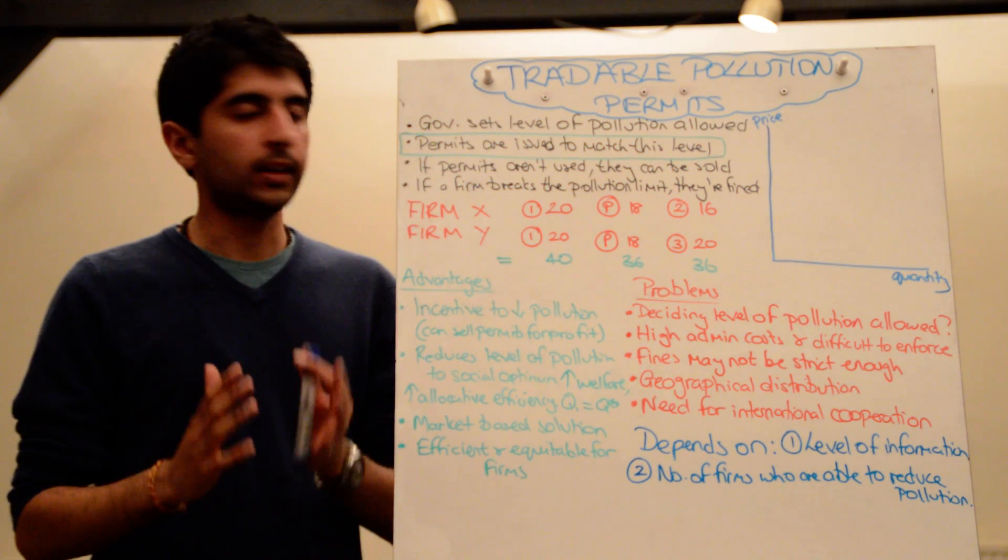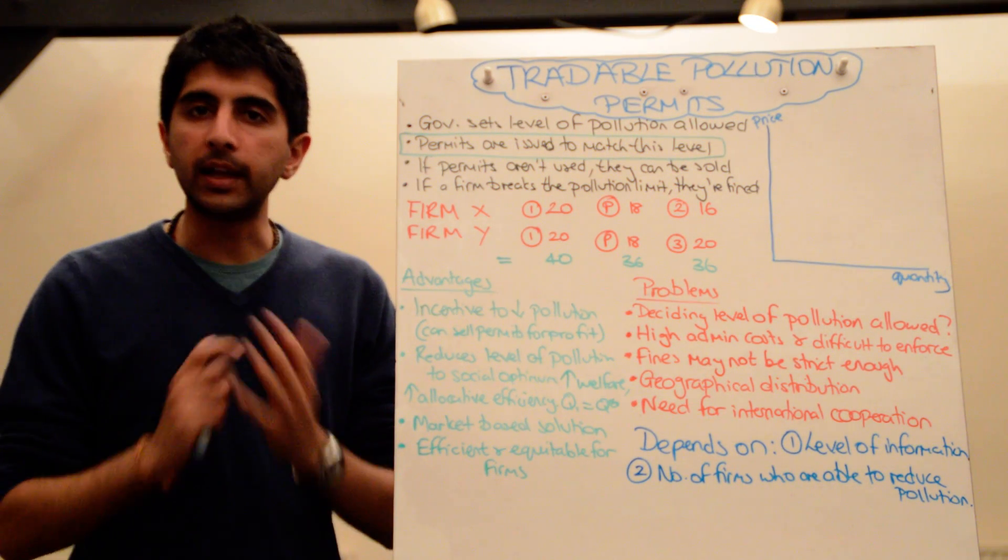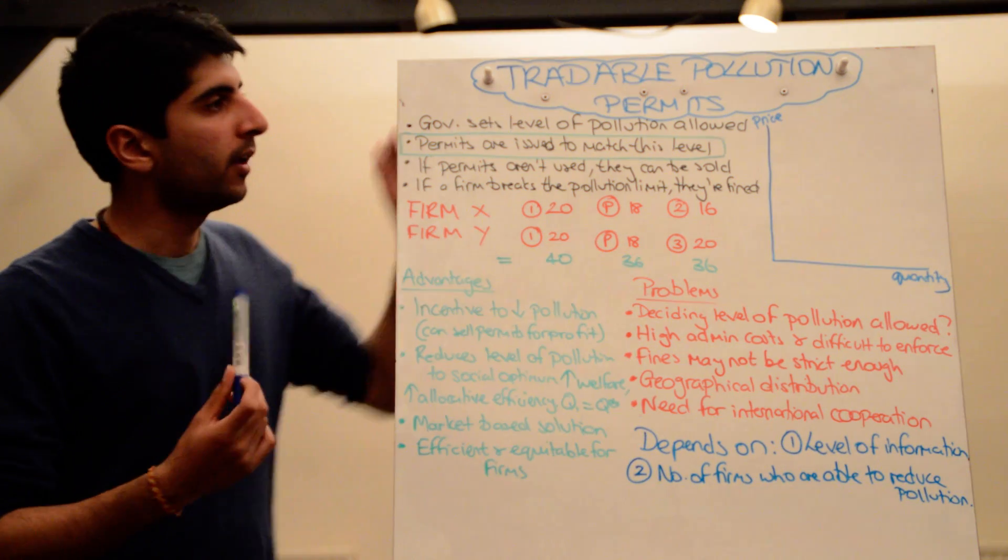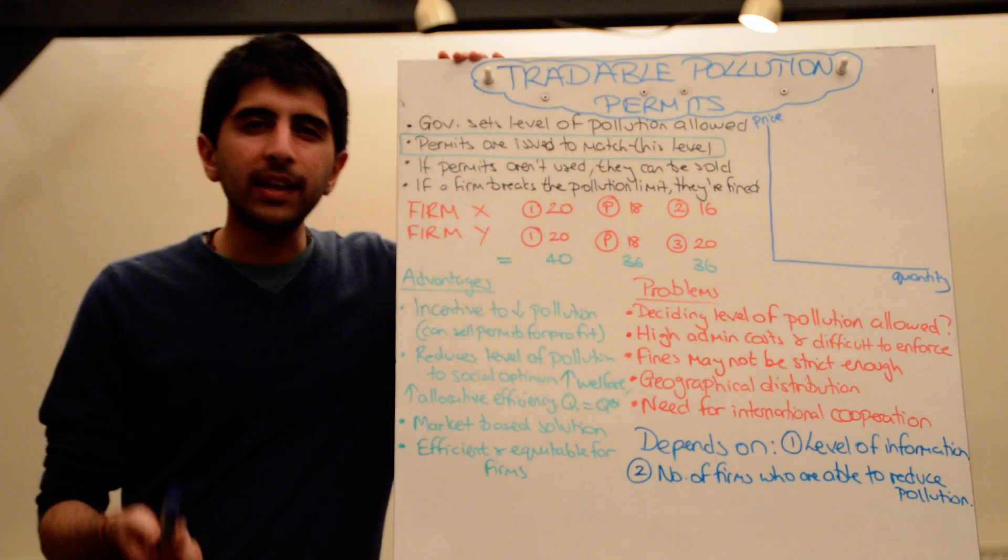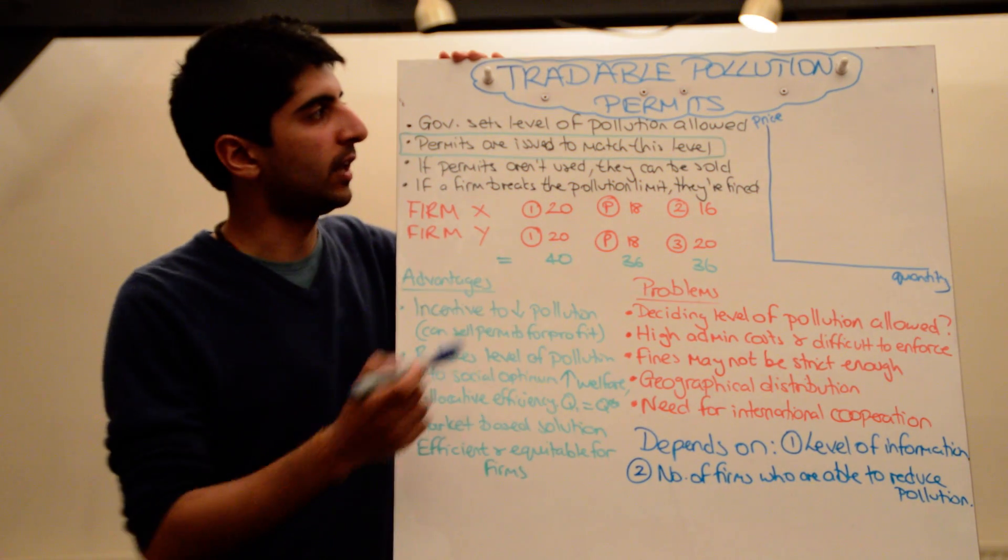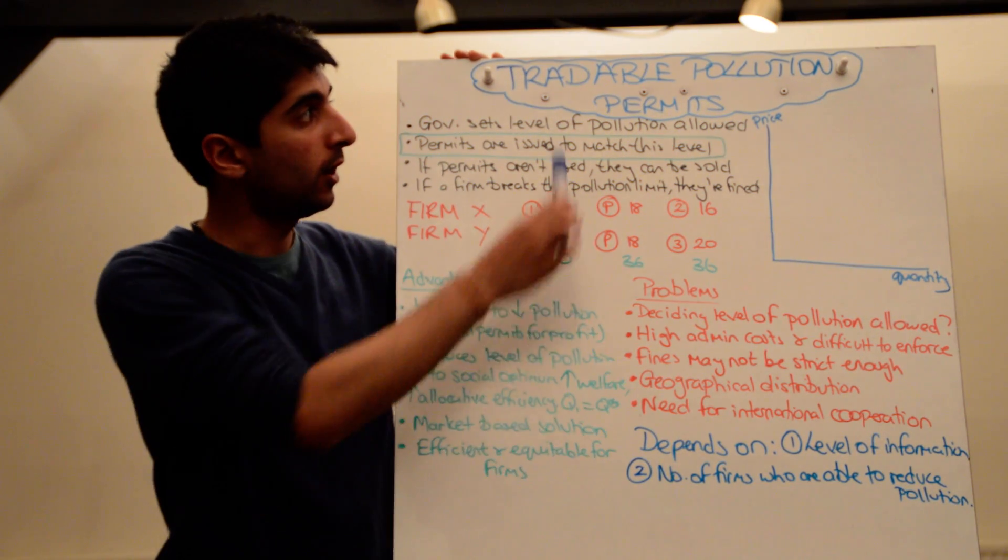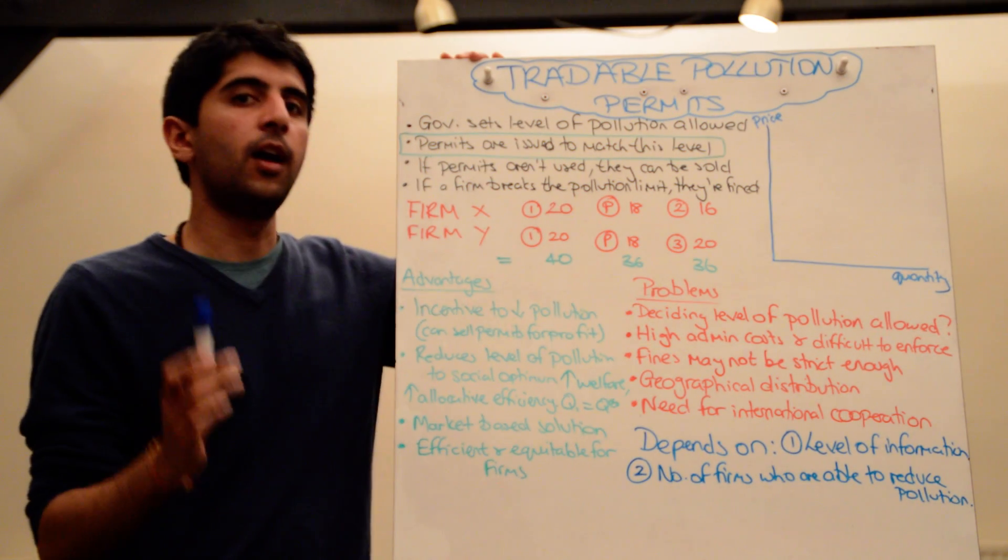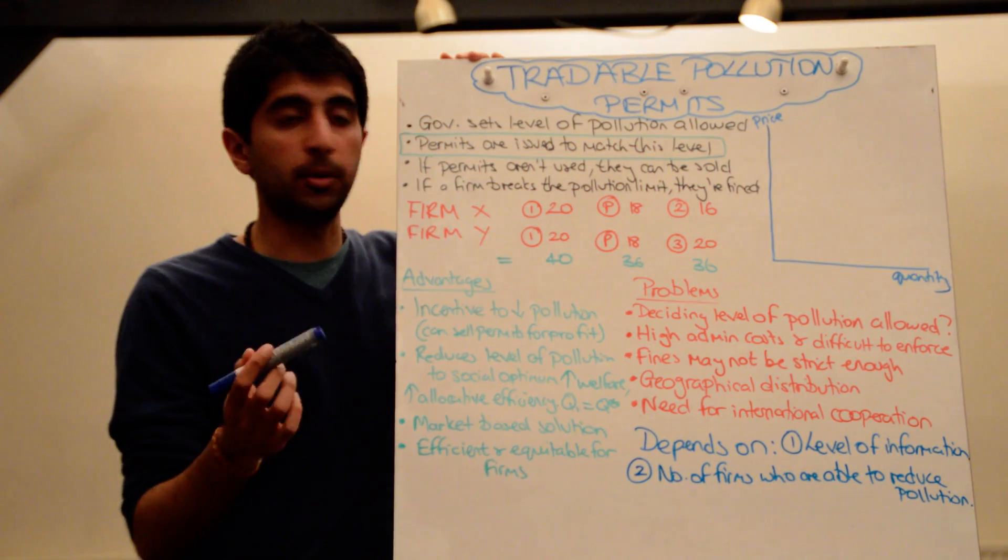If there is lots of pollution occurring in a country, in an economy, taxation and regulation are deemed to be kind of ineffective at solving pollution market failure. That's why a lot of economists argue that tradable pollution permits are maybe the best way of solving the market failure when there is pollution.